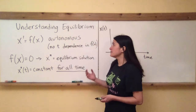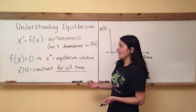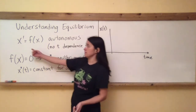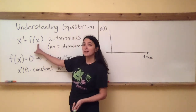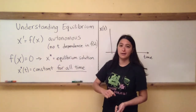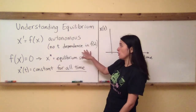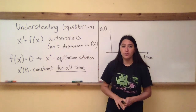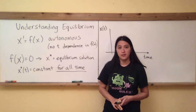What autonomous means is self-governing, so x is going to figure out how it's supposed to change just by looking at itself, not by looking at its watch and saying what time is it. There's no t-dependence in f of x, and that's very important for our theory of equilibrium points.